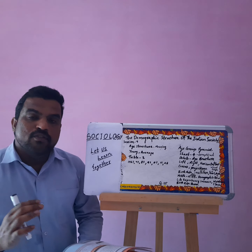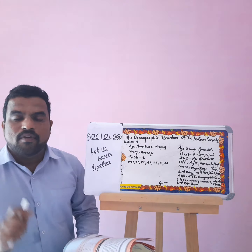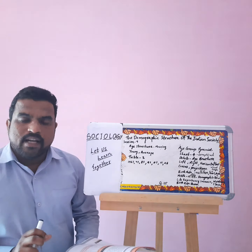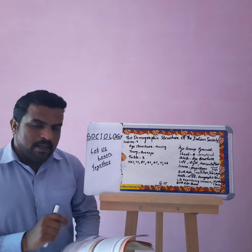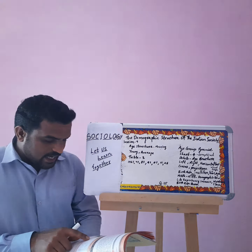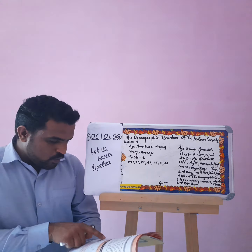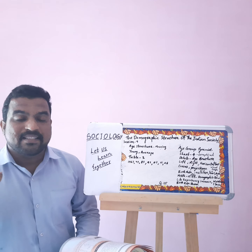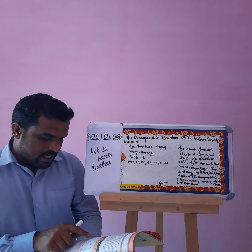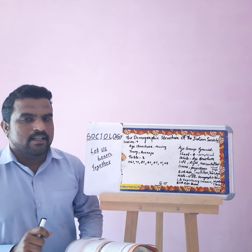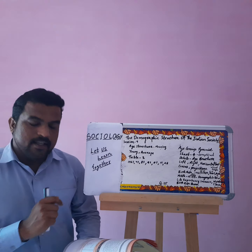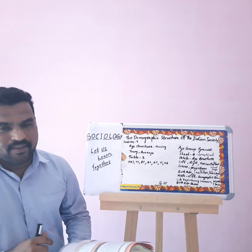Now looking at the 15 to 59 years age group: from 1961 through 1991, a good number is maintained, meaning the working-age population percentage is high. For 2001, 2011, and 2026, the percentage is increasing by about five percentage points — from 59% to 64%. This means the number of people belonging to 15 to 59 years will be very high in the future.